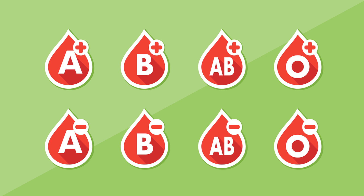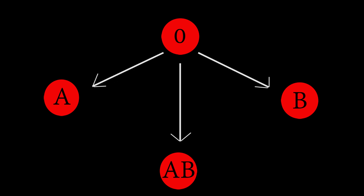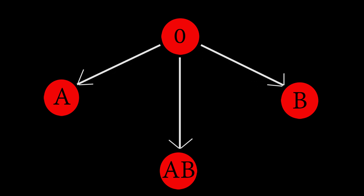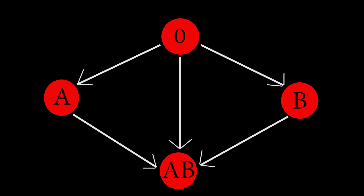Blood group is very important during a blood transfusion. Group O can give blood to all types but accepts only from group O. Group AB can only give blood to AB but accepts from all other groups. Group A can give blood to A and AB while accepting only from O and A. Group B can give blood to B and AB while accepting only from B and O.